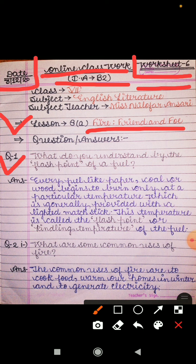Question number 1: What do you understand by the flash point of a fuel? The answer is: every fuel like paper, coal, or wood begins to burn only at a particular temperature, which is generally provided with a lighted matchstick. The heat or temperature provided by the lighted matchstick — the particular temperature at which the fuel starts to burn — is called the flash point or kindling temperature of the fuel.